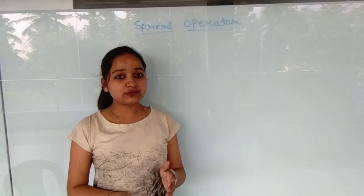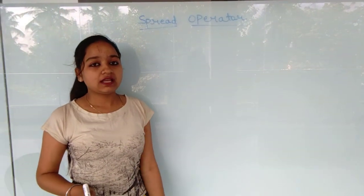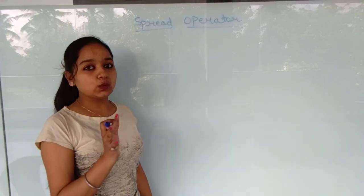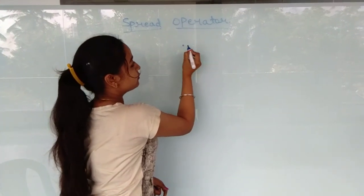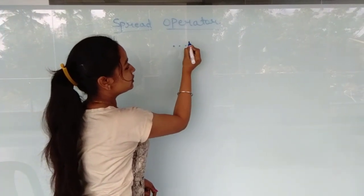My name is Deepika and we are here to explain what is the spread operator. Spread operator is mainly denoted with three dots.